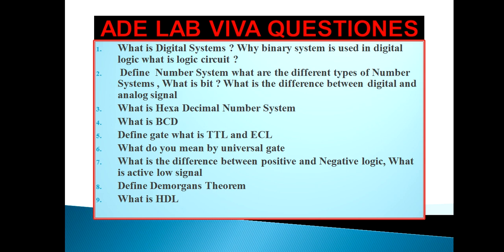Define gate. A gate is an electronic device which has one or more inputs and only one output. Different types of gates include AND gate, OR gate, and exclusive OR gate. A universal gate is a gate by which we can implement basic functions such as AND, OR, and NOT. NAND and NOR are the universal gates. TTL stands for transistor-transistor logic, and ECL stands for emitter-coupled logic.